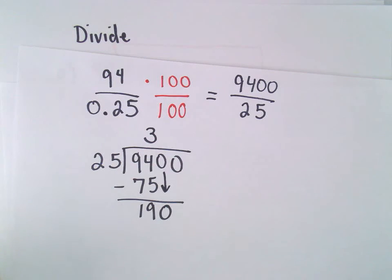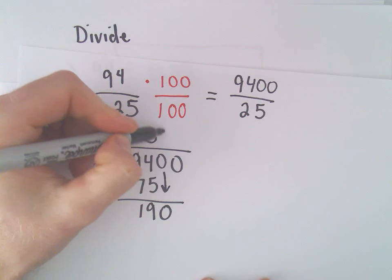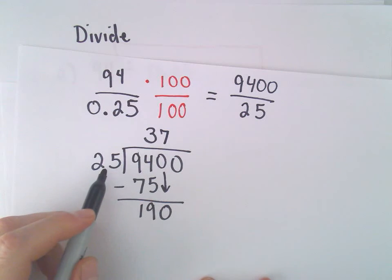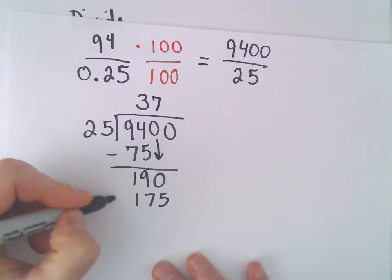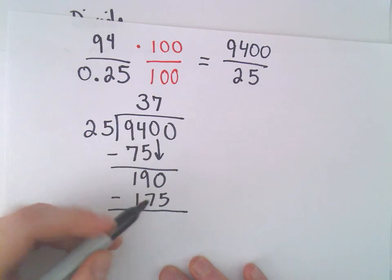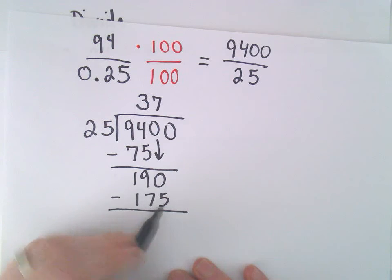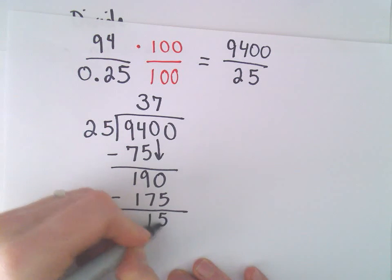Then we'll drop down our 0. I think if we had 7 quarters, 7 times 25 would be 175. We can just do our subtraction. We've got 190 minus 175, that'll leave us with 15.